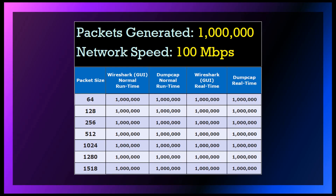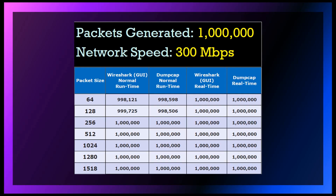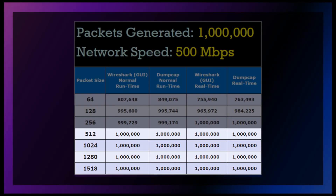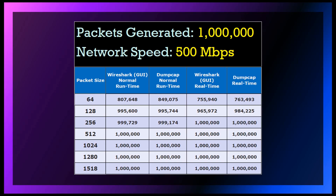On this chart, we generated 1 million unicast packets at network speeds of 100 megabits per second. Our laptop with Wireshark was able to capture all 1 million packets for both normal and real-time kernel. At 200 megabits per second as well as 300 megabits per second, Wireshark running in real-time kernel was able to capture all 1 million packets. At 500 megabits per second for 64 and 128-byte packets, Wireshark in normal runtime did slightly better. Byte sizes between 512 and 1518, both kernel modes captured all 1 million packets.